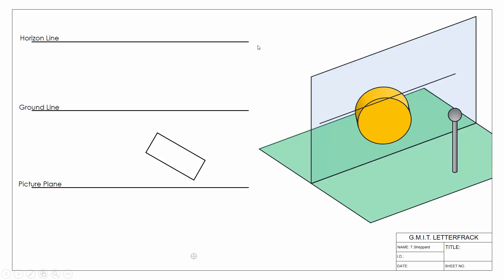Looking at the setup we have here, we have our two-dimensional setup. We have the plan view of our object, our picture plane in front of the object, our ground line, our horizon line, and our spectator located here. Over here we have the 3D version of exactly the same thing.